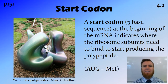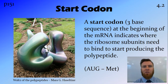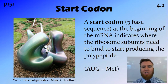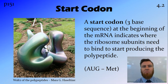So this then starts off the polypeptide or the peptide chain — a peptide being a string of amino acids. This start codon is always the same: AUG, so adenine, uracil, guanine, and it codes for the protein methionine.